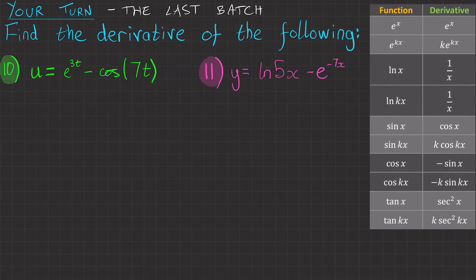Here's the last set of questions for you. I hope you've been doing well so far. Question ten. We've got find the derivative of the following. So we've got u equals e to the 3t minus cos 7t. And I'll start by writing du/dt equals.